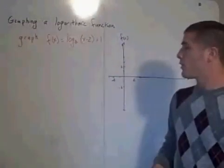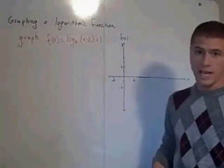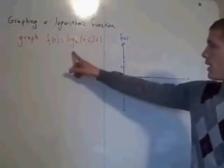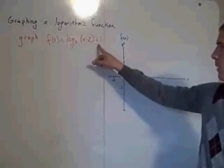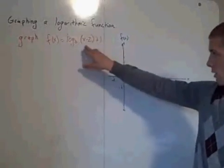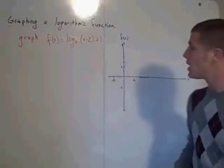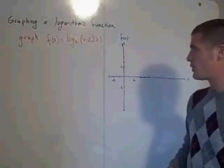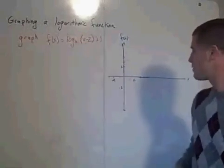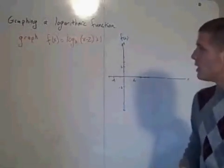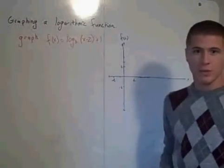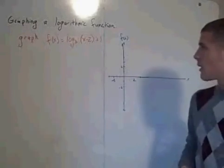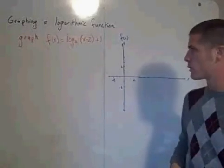You might be wondering how to handle a logarithmic function that does have a horizontal shift. So here you have log base 3 of (x minus 2) plus 1. And this x minus 2 in parentheses tells us that we have a horizontal shift. And that horizontal shift is 2 units. So again, you're going to find at least three points, find what the asymptote is, and then connect the dots using those three points you found.